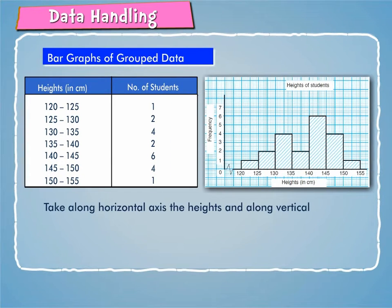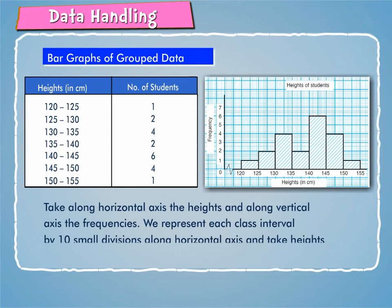We represent each class interval by 10 small divisions along horizontal axis and take heights proportional to the corresponding frequencies.